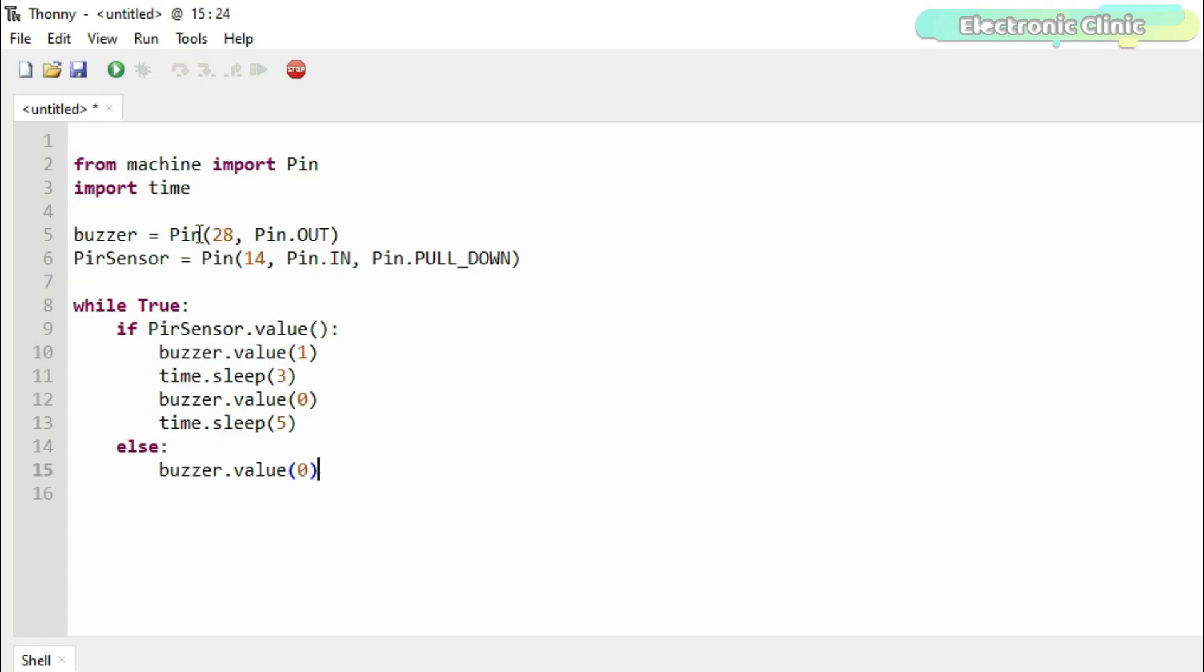I defined buzzer as the output and PIR sensor as the input. Buzzer is connected to GP28 and PIR sensor is connected to GP14. I'm going to call these pins as the buzzer and PIR sensor.